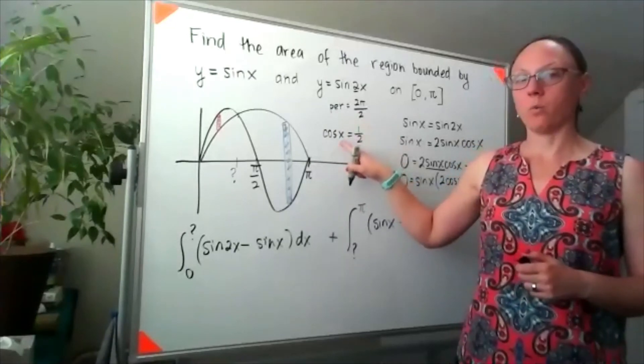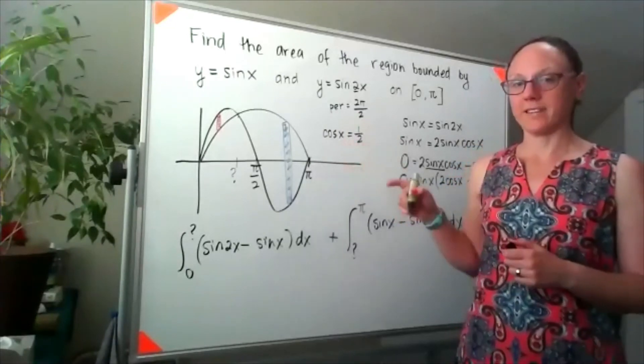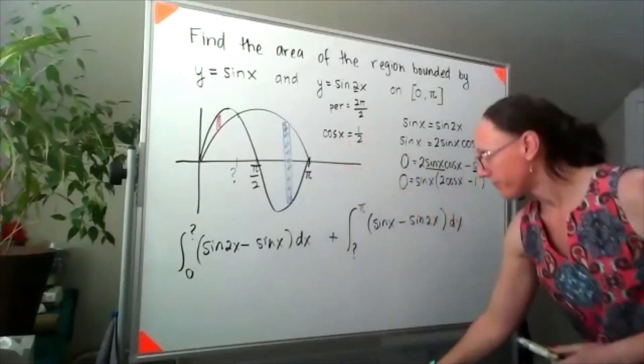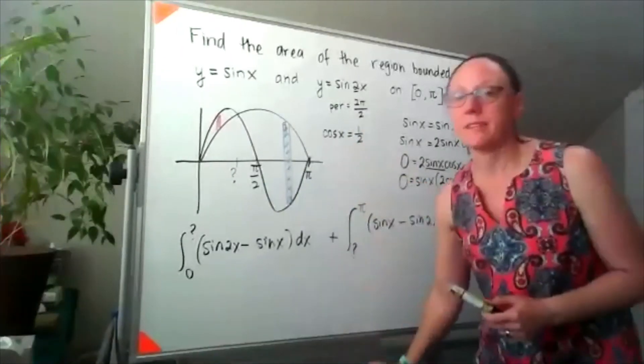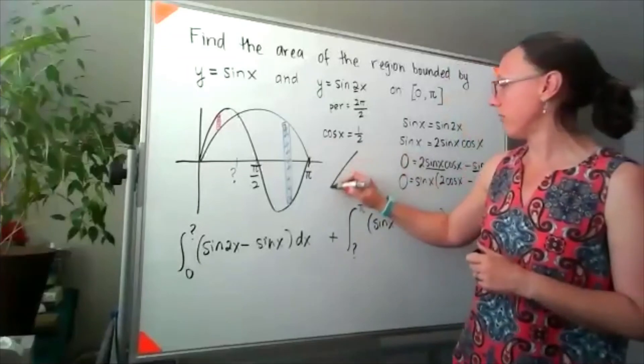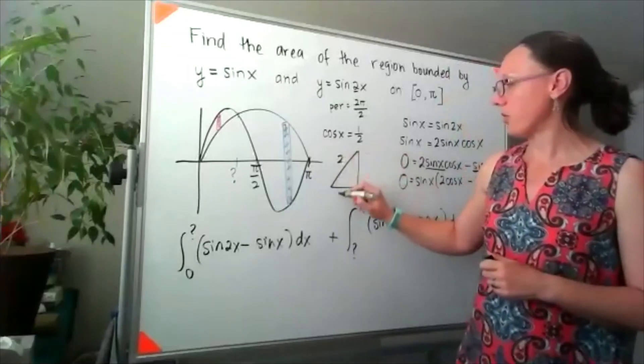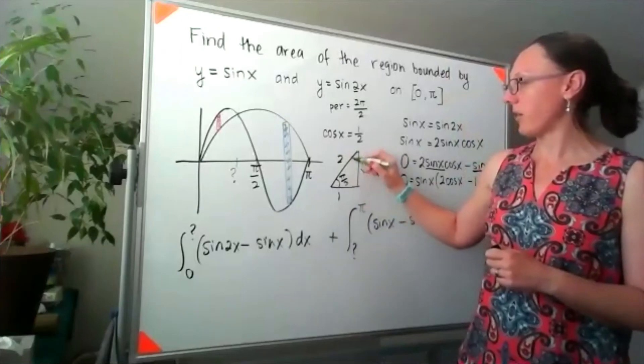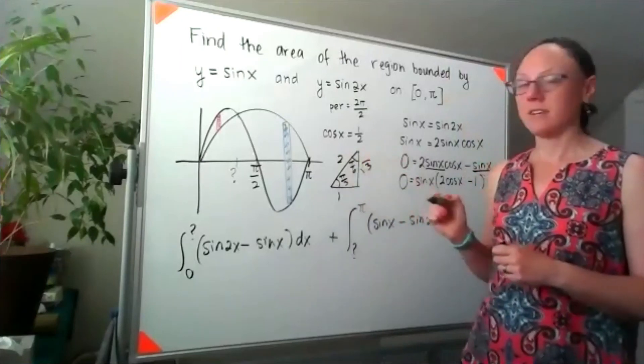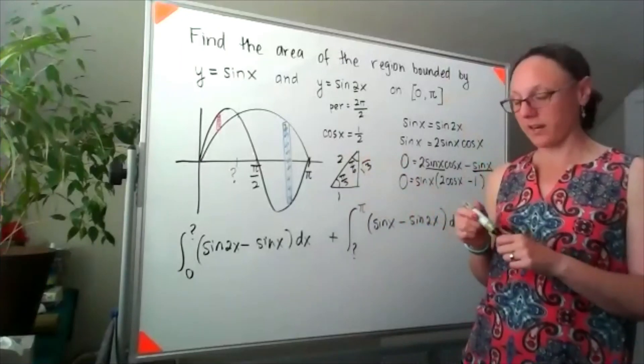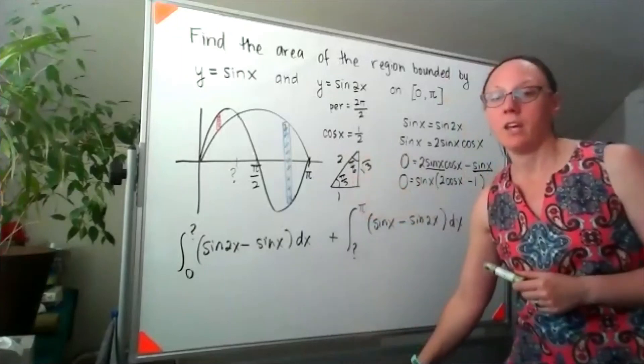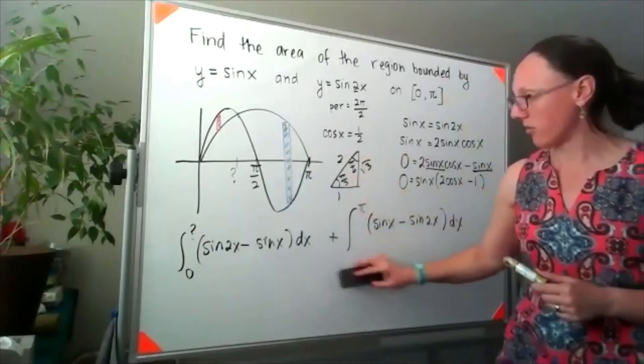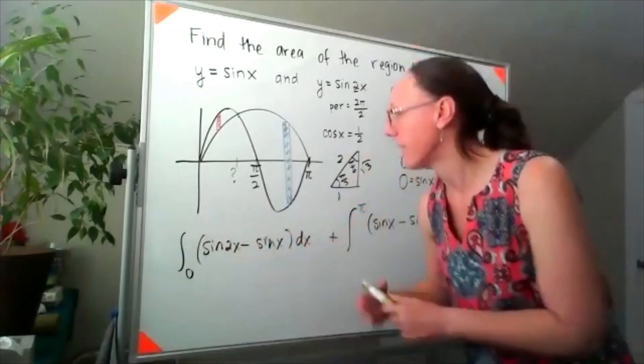So now we're looking for what's the angle where cosine is equal to one half. I'm going to draw myself a quick triangle. That's two and that's one and that's square root of three. That is pi over three and pi over six. It looks to me like cosine is equal to a half at pi over three, and that is our missing angle to plug in here.